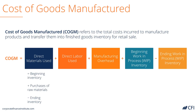Direct materials equals the beginning inventory plus any purchases, minus the ending inventory of raw materials. In terms of labor, it is the number of hours worked multiplied by the hourly rate.